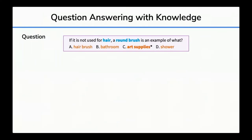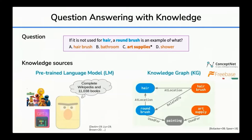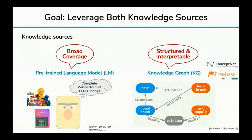Question answering is a fundamental problem in natural language processing, and to do well, systems need to access relevant knowledge and reason over it. Knowledge can be encoded in large language models pre-trained on unstructured text, such as BERT, or represented in structured knowledge graphs such as Freebase and ConceptNet, where entities are represented as nodes and relations between them as edges. Both knowledge sources have complementary strengths. Pre-trained language models have shown great success in many QA tasks thanks to broad coverage, but they may not work well for interpretable or logical reasoning such as handling negation. On the other hand, KGs are more explicitly represented and suited to structured and interpretable reasoning, but knowledge graphs may lack coverage and be noisy. Our goal is to leverage both sources of knowledge to do better in question answering.